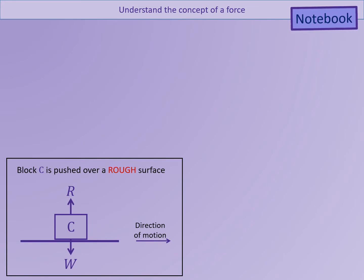We are going to consider object C now. Object C is being pushed over a rough surface in the direction shown. Object C has a weight force, mg. It also has a normal reaction, which is caused by the surface it is sitting on.